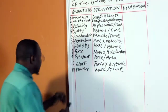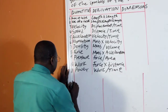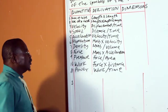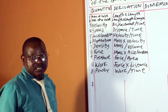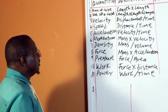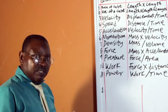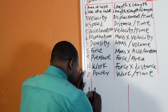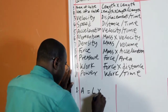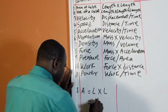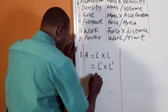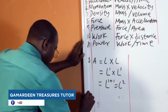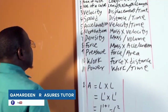Number 1 is area of a cube. The derivation of area of a cube — we know that area is length times breadth. But in a cube, the value of length is equal to the value of breadth. So area is equal to length times length, which is L raised to power 1 times L raised to power 1, equal to L raised to power 2.